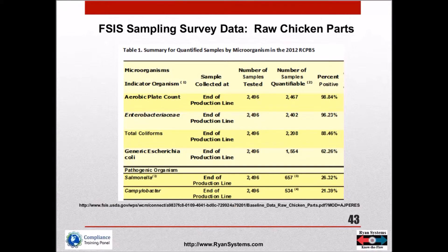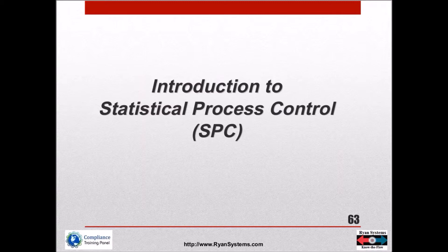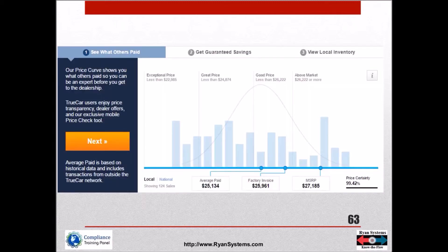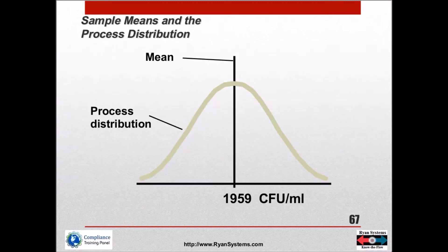Here's some data: I'm going to take raw chicken parts, take a sample at the end of the production line, and test for coliforms, E. coli, Salmonella, and Campylobacter. Look at this data — this is real data. Let's look at this from a little different perspective and get into the statistics right here.